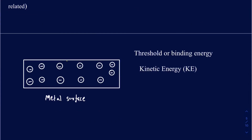Suppose we have a metal surface with many electrons, and we want to eject those electrons. Before shining the light, know that these electrons are bound to the metal surface. To unbind them, you must supply enough energy to break that interaction. That energy is called the threshold energy or binding energy, represented by the symbol phi (φ).